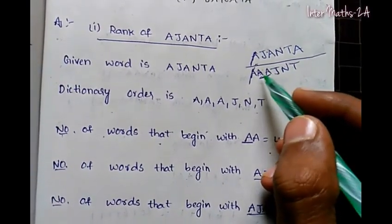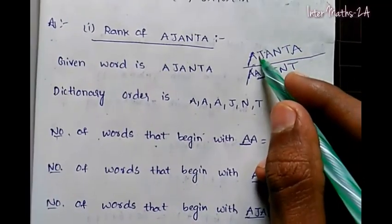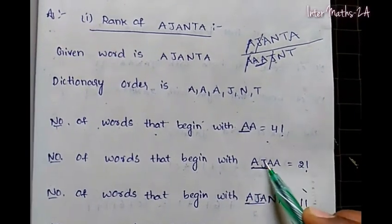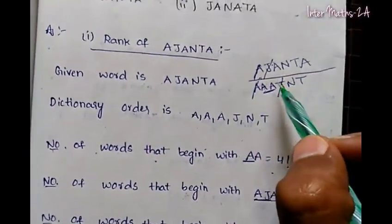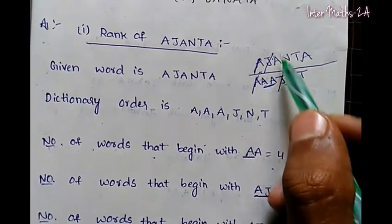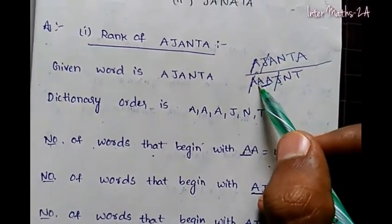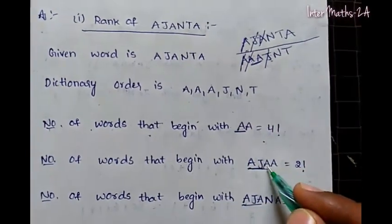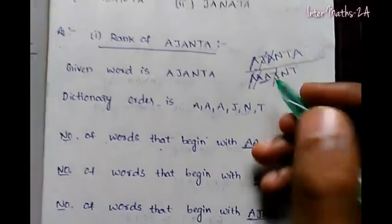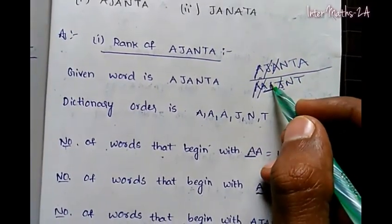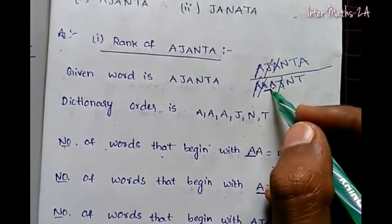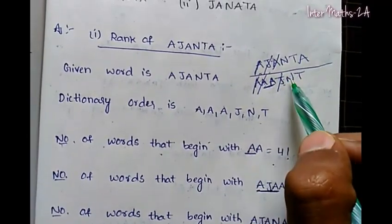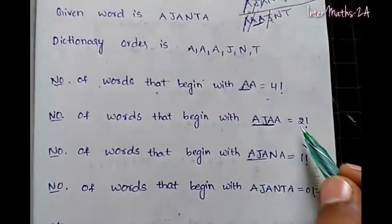The next letter after A is J. If we have J, we cancel J. So J is fixed. When A is fixed, we look at the next letter. Since we have double A's in the remaining letters — A plus A — that is 2 factorial in the denominator. So this gives 2 factorial.